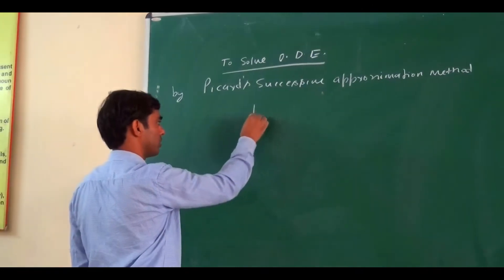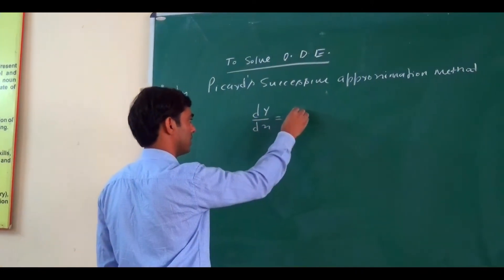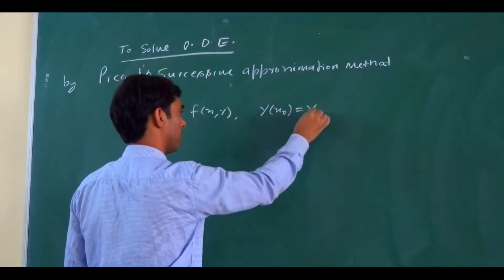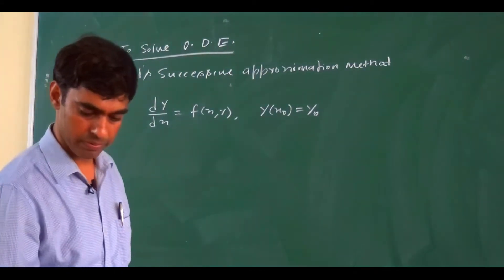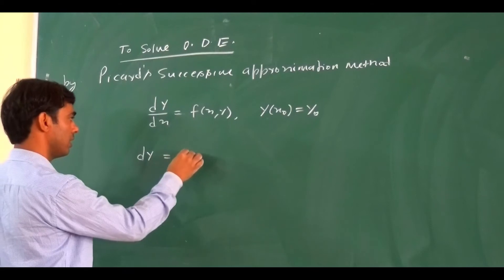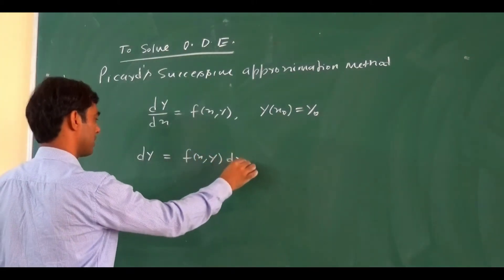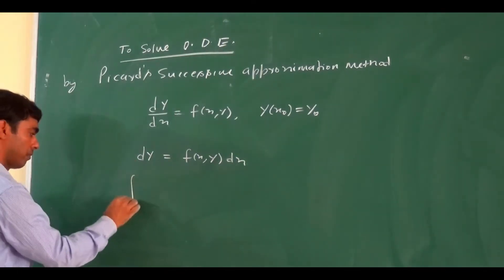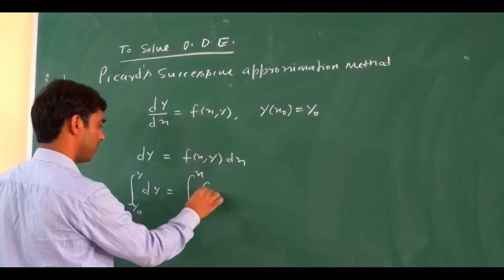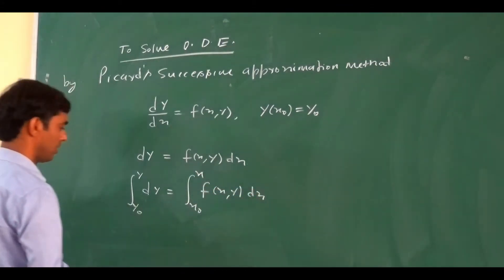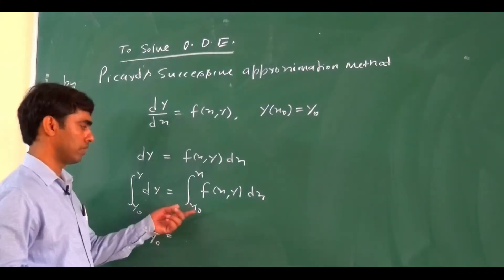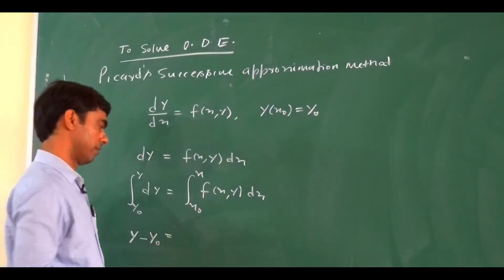In a first-order, first-degree differential equation dy/dx = f(x, y) with initial condition y(x₀) = y₀, we write dy = f(x, y)dx and integrate both sides: from y₀ to y on the left, and from x₀ to x on the right. The left-hand side integrates to y minus y₀, but we cannot integrate the right-hand side directly because of the presence of the variable y.